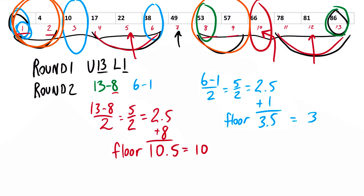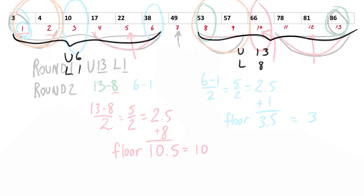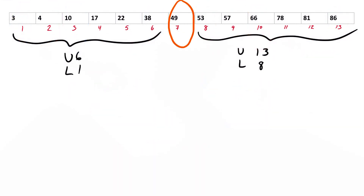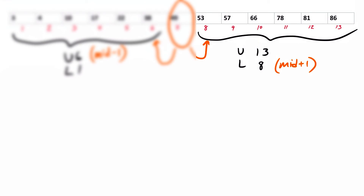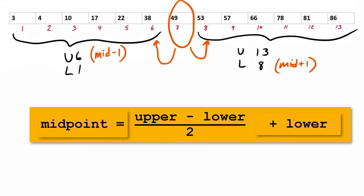Now there's one last problem to solve: how can I change the upper and lower position values as I eliminate half the list each round? With my original list, if my midpoint of 7 is too big, I should set my new upper equal to 6, which is the midpoint minus 1, and the lower doesn't change. But if my midpoint is too small, I set my new lower equal to 8, which is mid plus 1, and the upper doesn't change. Then I use my formula to get a new midpoint.